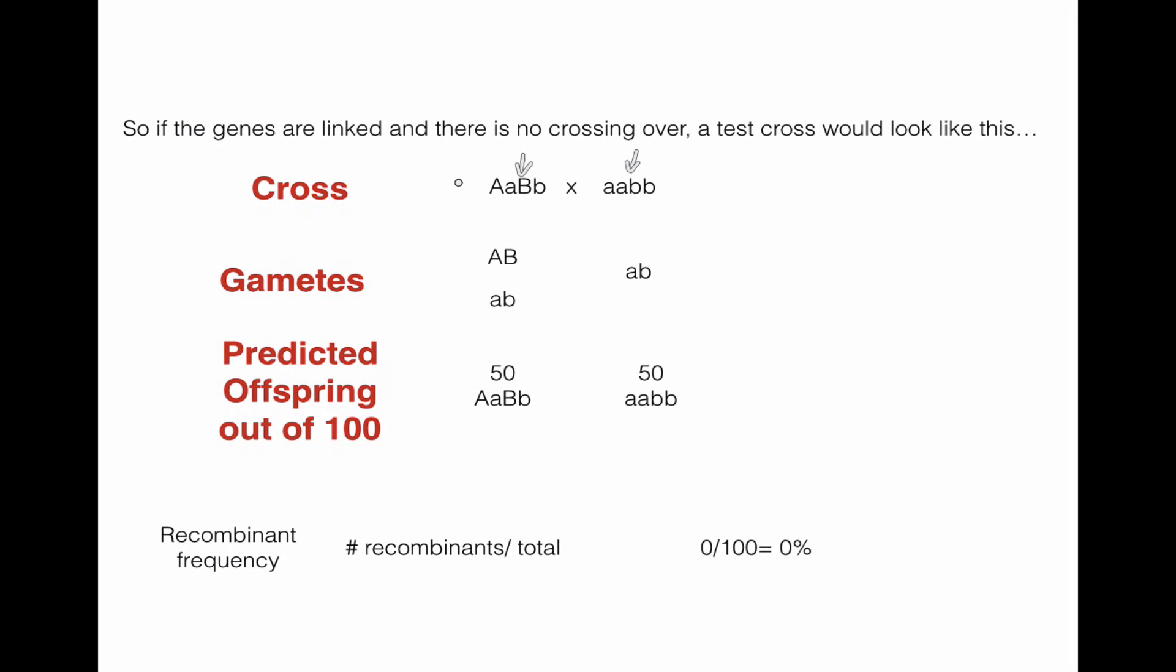Now, remember, because the genes are linked, they're linked. So we can't put a big A and a little B together, because remember, the big A and the big B are on the same chromosomes, so they can't get away from each other. So this individual here can make this gamete or this gamete, and of course, we only have one possible gamete from this individual here. So the offspring out of 100, we're going to predict we're going to get half of them are made by combining this gamete and this gamete, and the other half is going to be made by combining this gamete and this gamete.